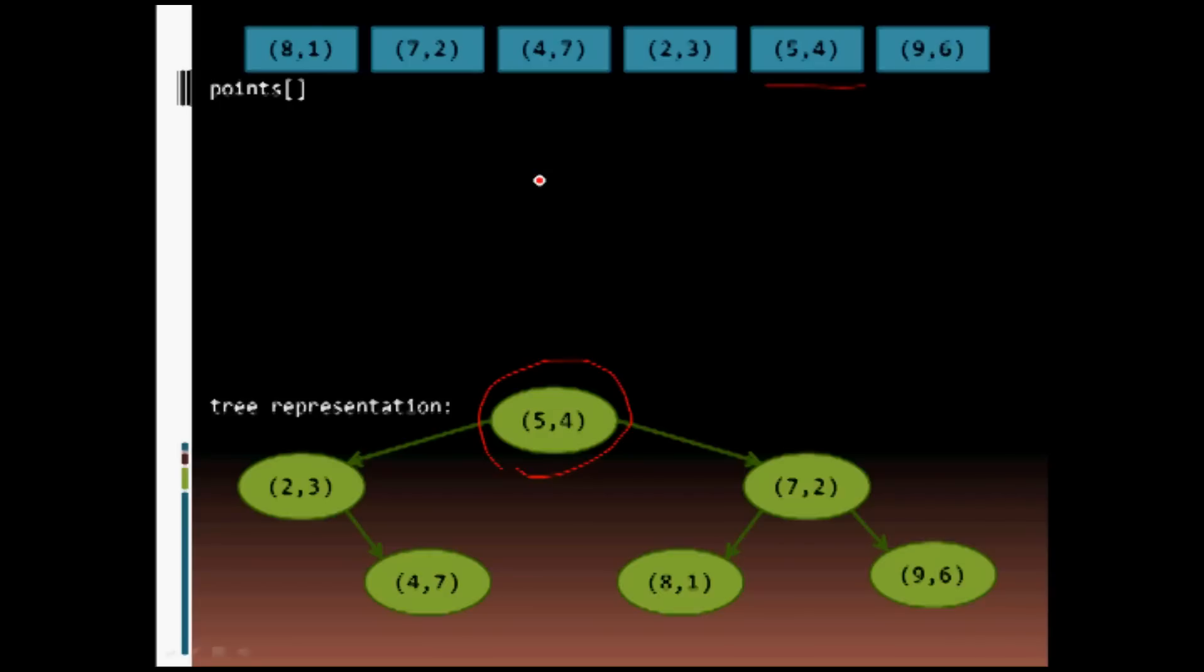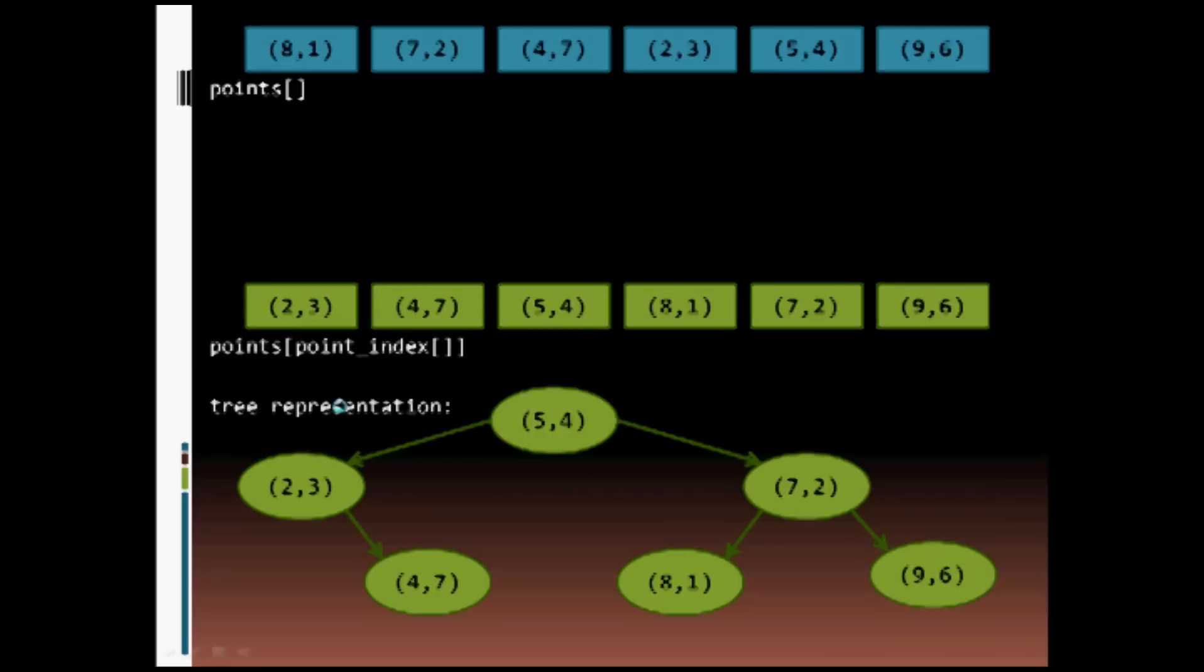And so to represent that tree in memory, we are going to actually use, or it is going to be represented as an array. So here's our sorted array of, or sorted in a two-dimensional sense, KD tree array.